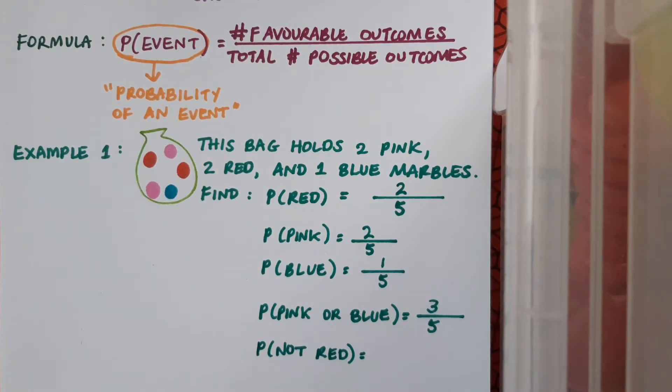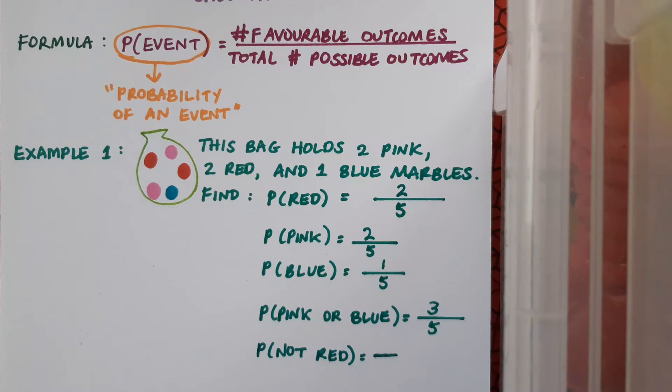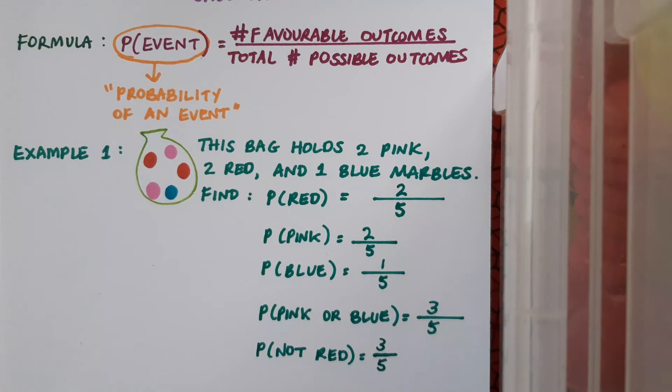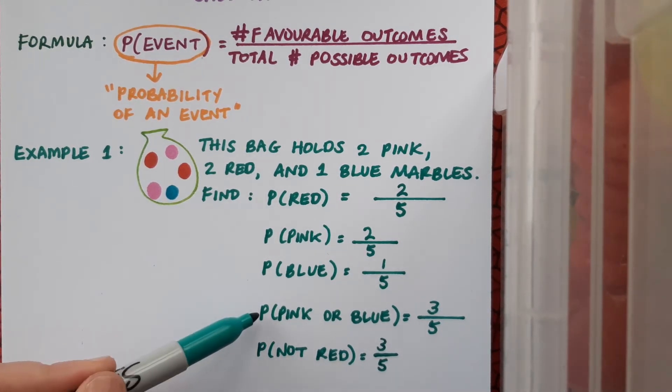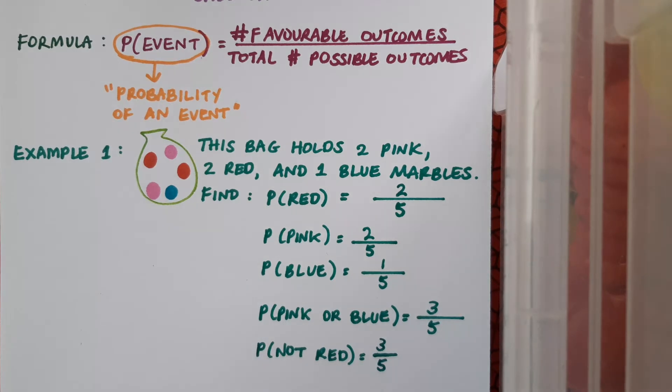Our next one is to find the probability that a marble is not red when I've selected one at random from the bag. Pause the video now and do that one yourself. Well, the favorable outcome here is to not get red. So there's one, two, three of those, and so that's three over five. You might notice that these two probabilities are equivalent. Pink or blue is the same as not red.